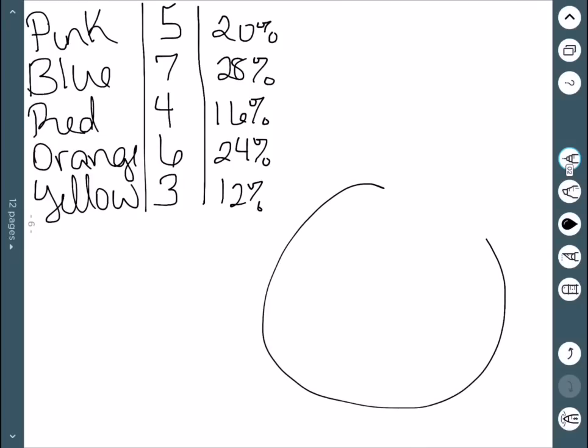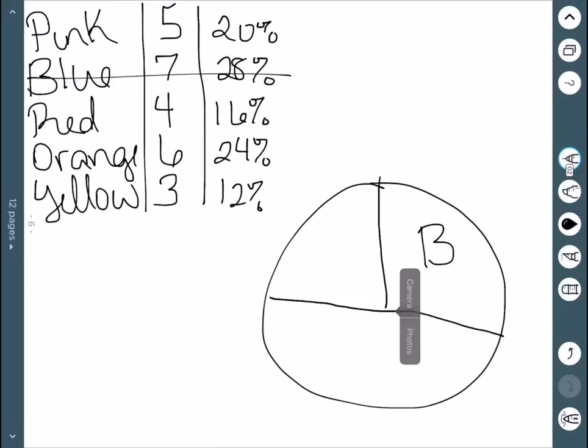So we need a circle, and it's usually easiest to start with the biggest pie slice. However, it really doesn't matter. The first one was 28, or the highest one was 28, so it needs to be just bigger than a fourth. And this was blue. The next biggest one was orange, which was once again 24, so just slightly less than a quarter. So there's orange.